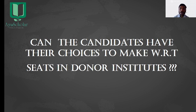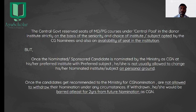Can candidates make choices with respect to seats in donor institutes? Yes, they have that chance, but seat allotment is based upon three criteria: seniority, the choice of institute or subject opted by the CG nominee, and availability of seats in the institute.